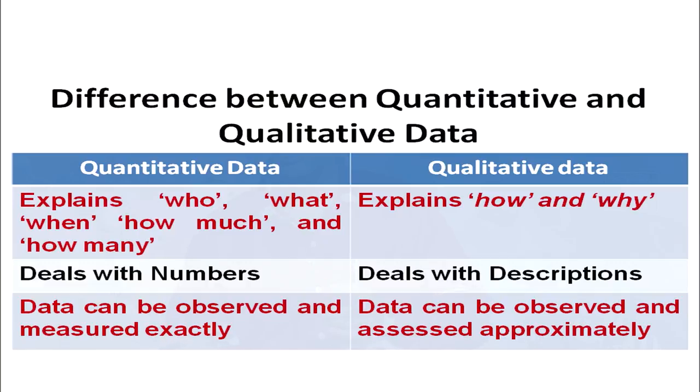Quantitative data deals with numbers; qualitative data deals with descriptions — why a student is showing a particular characteristic or behavior, what are the reasons or causes for those behaviors, why the student's achievement is low. This deals with descriptions and this type of data are qualitative in nature.